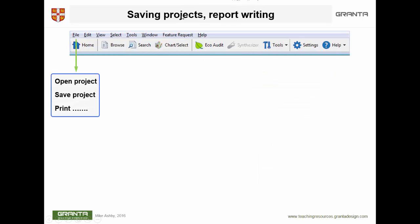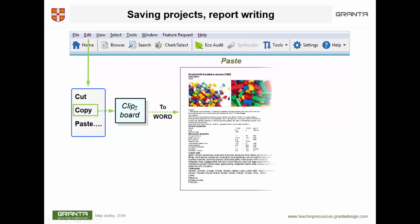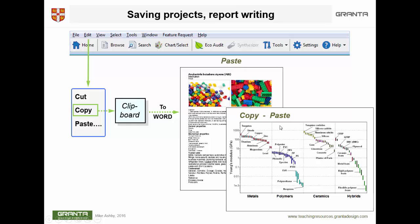Once you've done all that, you may want to write a report. First, there's considerable work involved in making those charts, so you'll want to save them. That's done by going to File, Save Project, giving it a name and location. The project will be there when you next open the software, and you can reload it and return to exactly the point where you saved it. You can also copy and paste either a record or a chart — right-click on the chart and select Copy. That copies it to the clipboard and you can paste it straight into Word, creating a Word document you can edit, move pictures around, and so forth.